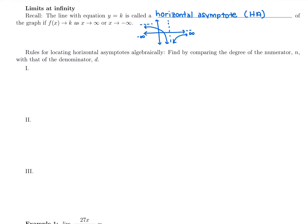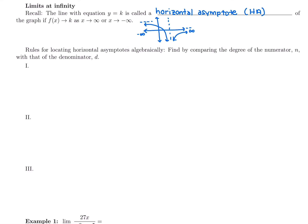We can use the rules from algebra about locating horizontal asymptotes algebraically. To do this, we need to compare the degree of the numerator to the degree of the denominator. The degree is the highest power of x. Compare the highest power of x in the top and the bottom to find the limit as x goes to infinity.